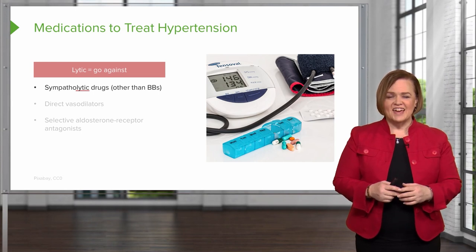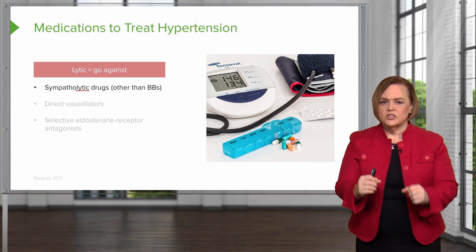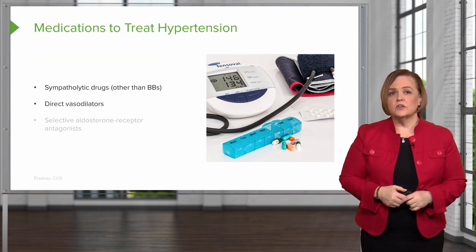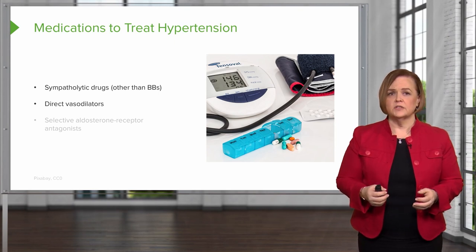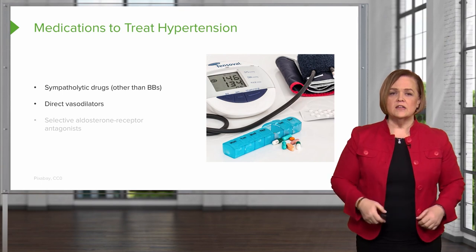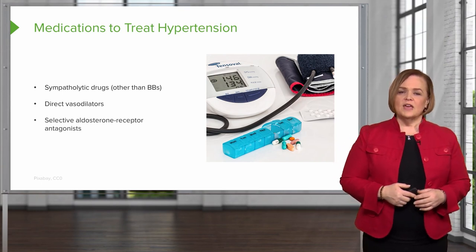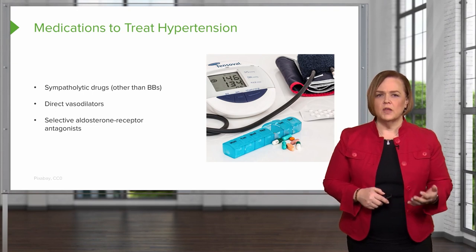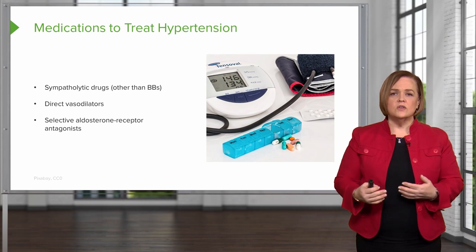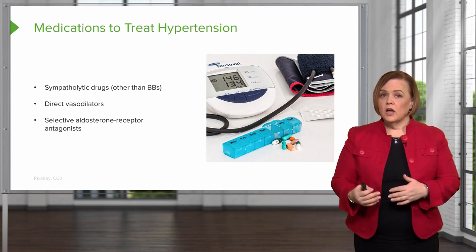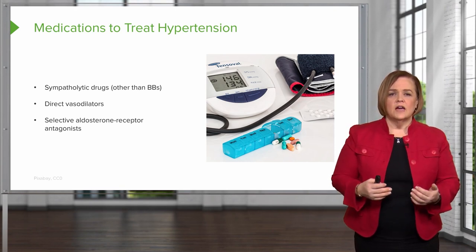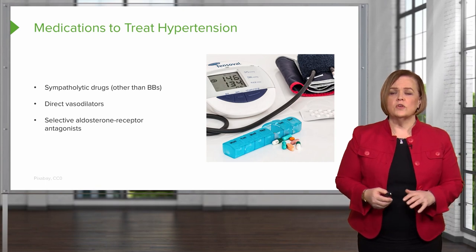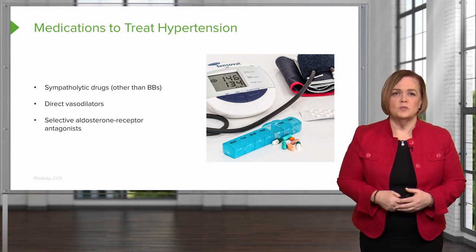Since the sympathetic nervous system causes potent vasoconstriction and increases your heart rate, sympatholytic drugs will do the opposite. Direct vasodilators are another group of medications used to treat hypertension — they directly vasodilate and we end up with lower blood pressure. We also have selective aldosterone receptor antagonists or blockers. The words antagonist and blocker are usually used interchangeably, so don't let that confuse you. Beta blockers, beta adrenergic antagonist, selective aldosterone receptor antagonist — these terms can all mean the same category. That gives you an overview of the big groups of medications we'll be looking at across multiple videos.